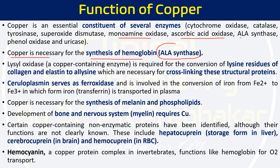Lysyl oxidase is a copper-containing enzyme required for the conversion of lysine residues — either from collagen or from elastin — to allysine. This allysine is a compulsory component for the cross-linking of collagen fibers and elastin fibers. If we don't have functional lysyl oxidase, allysine will not form, cross-linking will not occur, and collagen and elastin fibers will not work properly.